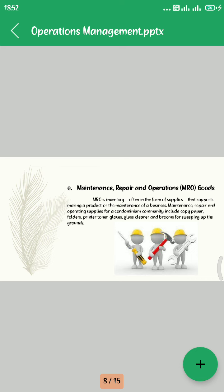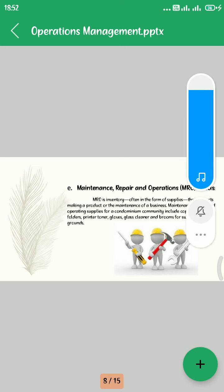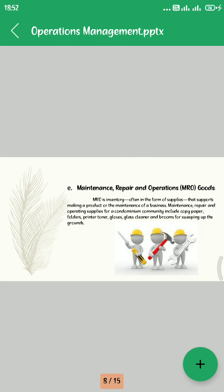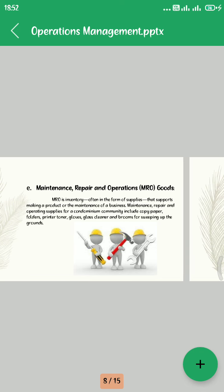Fifth, Maintenance, Repair, and Operational goods (MRO). MRO is inventory in the form of supplies that supports making a product or the maintenance of the business. Maintenance, repair, and operational supplies include copy paper, paper folders, printing tools, and similar office items.